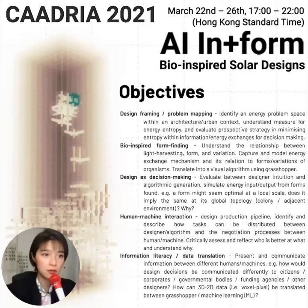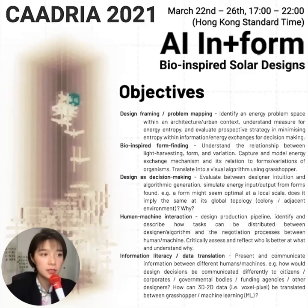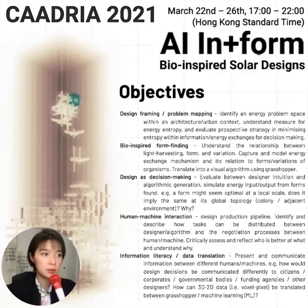The fifth objective is information literacy — to raise awareness in the search, organization, and communication of information in its varying formats, especially for decision-making and learning processes, where information is consistently presented and communicated between different humans and machines. A specific concern is between 2D and 3D data: how can we translate between rule-based and machine learning systems with these different data formats? It's proving the problem as much as proving solutions.